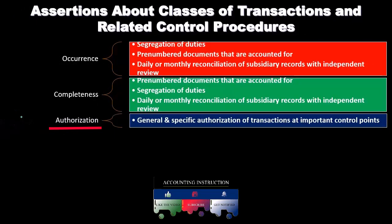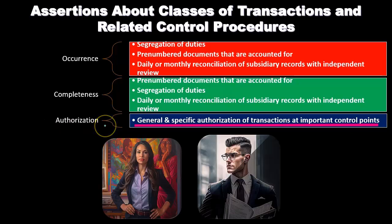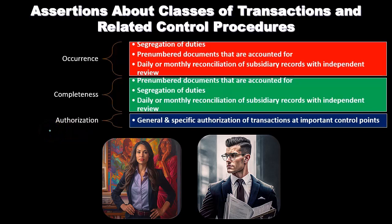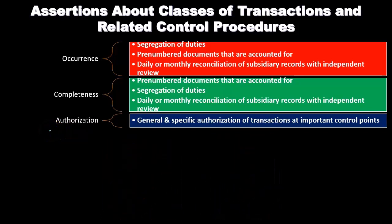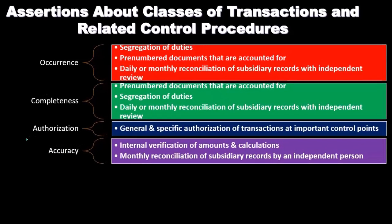Then we have authorization. Do we have the proper authorizations within our control system? We have general and specific authorization of transactions at important control points. We want to make sure that those authorizations are in place at specific control points and that we're able to demonstrate those actions are taking place — that the authorization is happening.